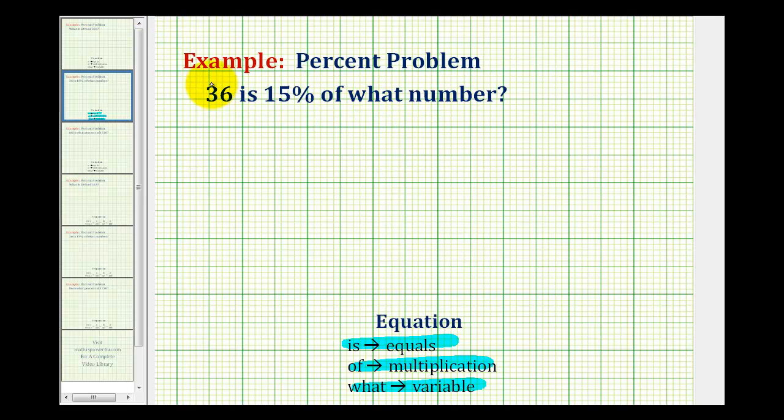To write the equation, we'll write down 36 is, represents equals. Then we'll write down 15 percent as a decimal, that'll be 0.15. 'Of' represents multiplication, and then 'what' or 'what number' represents our variable, which we'll call x.